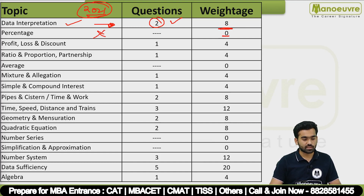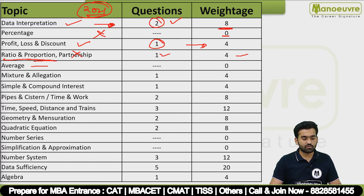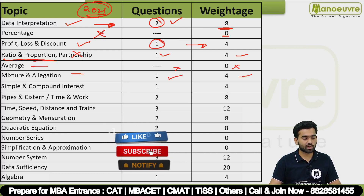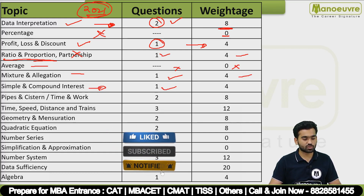Profit and Loss had 1 question for 4 marks. Ratio and Proportion had 1 question for 4 marks. Average had no question — 0 marks. Mixture and Alligation had 1 question for 4 marks. Simple and Compound Interest had 1 question.